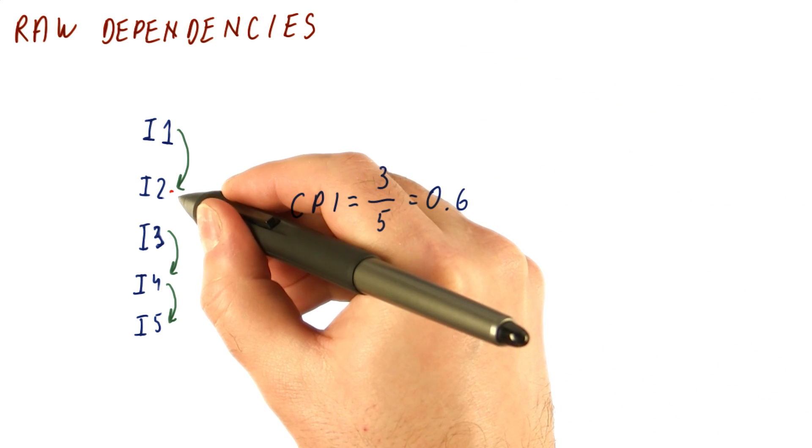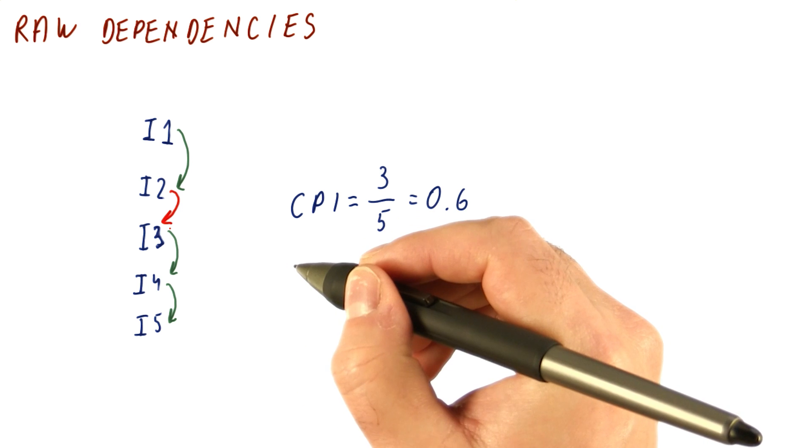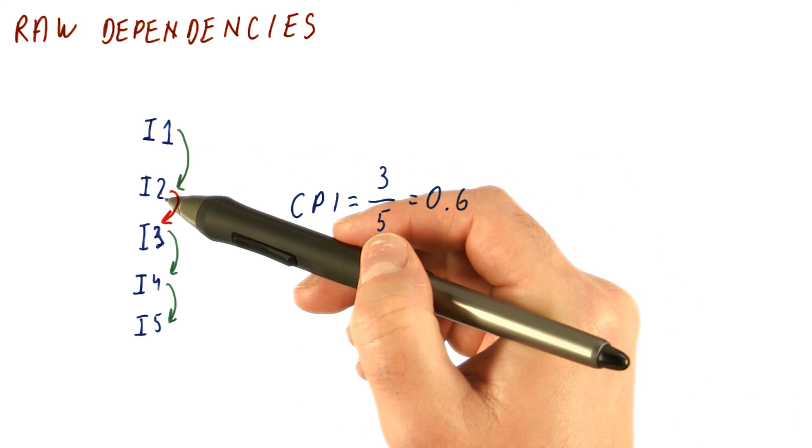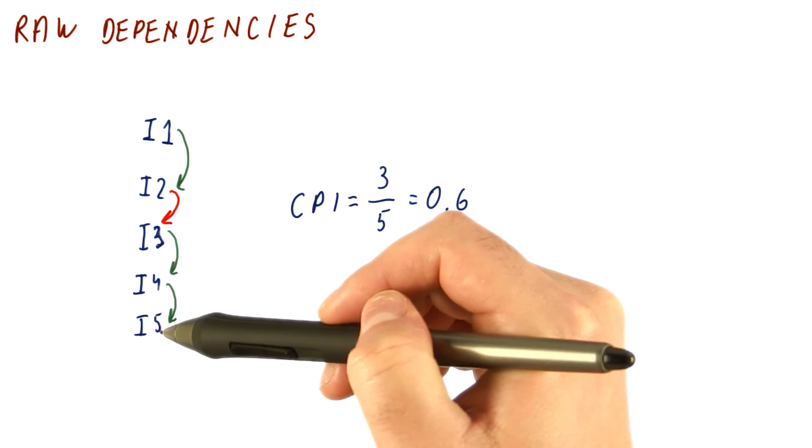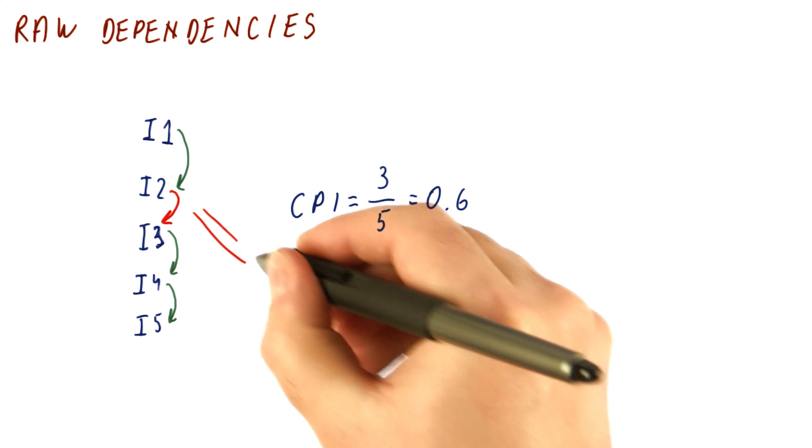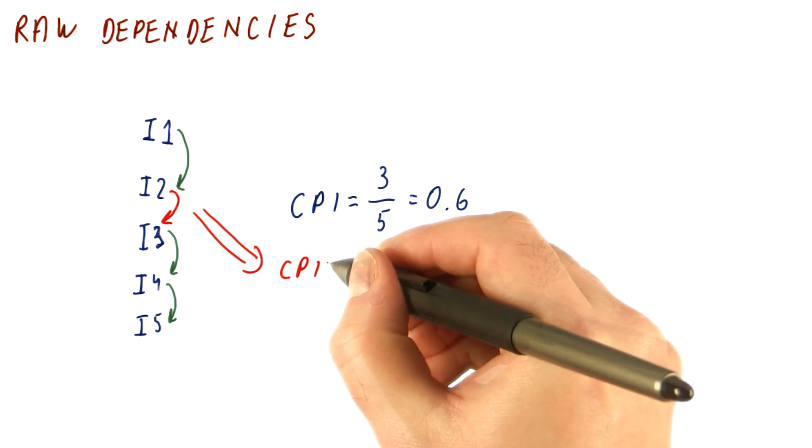And finally, if we did have this dependence as well, now we have to do I1 and then I2 and then I3 and then I4 and then I5. So now the CPI with this is going to be one.